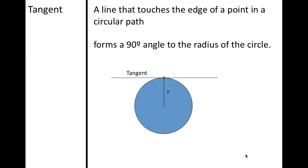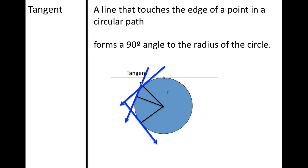We call it tangential speed. A tangent is just a line that touches the edge of a point anywhere along the circular path. It always forms a 90-degree angle to the radius of the circle. Here is my tangent line going at a point along the circular path, creating a 90-degree angle with the radius. This shows that as the object spins, the point is traveling in various directions.